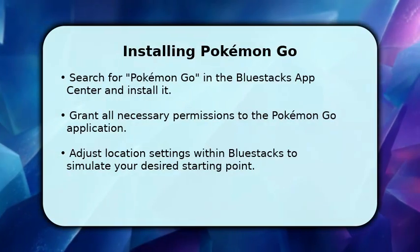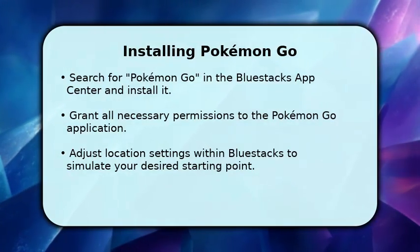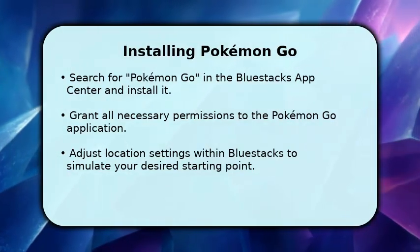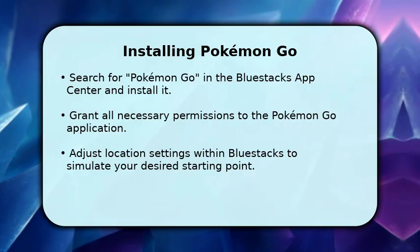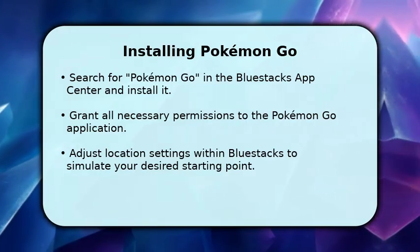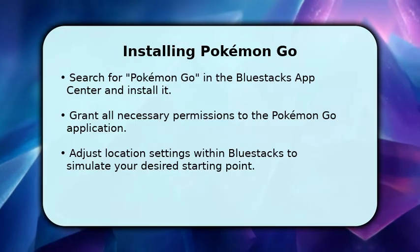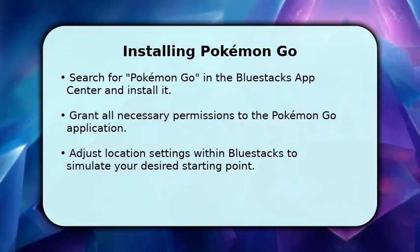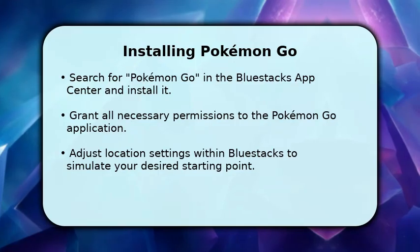Now that Bluestacks is ready, let's get Pokemon Go installed. Head over to the Bluestacks App Center and use the search bar to find Pokemon Go. Click to install it, just like you would on a mobile device. During installation, the game will ask for several permissions.